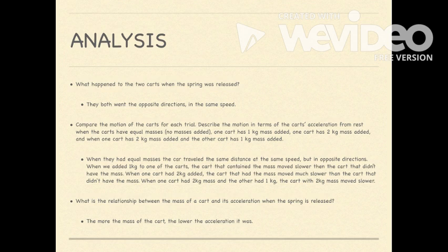When one of the carts had two kilograms of mass added, the cart that had mass moved much slower than the cart that didn't have the mass. And when one cart had two kilograms of mass and the other one had only one kilogram of mass, the cart that had two kilograms of mass moved much slower. The more mass of the cart, the slower the acceleration it was.